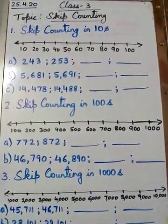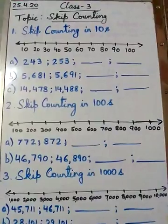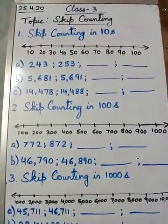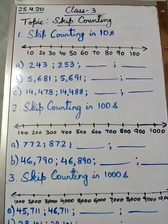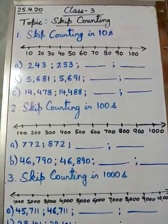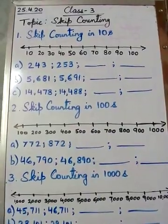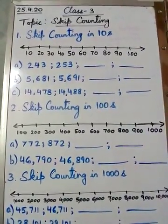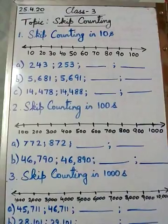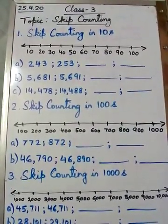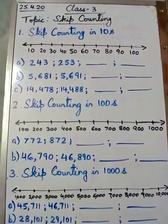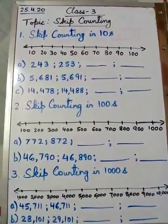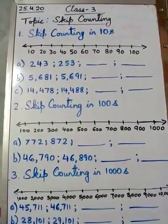Good morning dear parents and children. I hope you all are fine. In yesterday's class we discussed forming four and five digit numbers — smallest and greatest. I hope you have done exercise 1.6 well and checked the answers from the back of your book. Today's topic is skip counting. What is counting? It's 1, 2, 3, 4, 5, 6... but skip counting means we leave some numbers — we skip numbers in between.